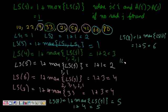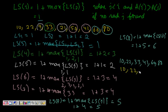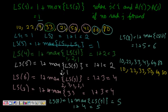The longest subsequence is of length 6. One possible solution is [10, 22, 33, 41, 60, 80], and another is [10, 22, 33, 50, 60, 80]. We don't have a unique solution — there can be multiple valid longest increasing subsequences. This is the way to solve the Longest Increasing Subsequence problem using dynamic programming.